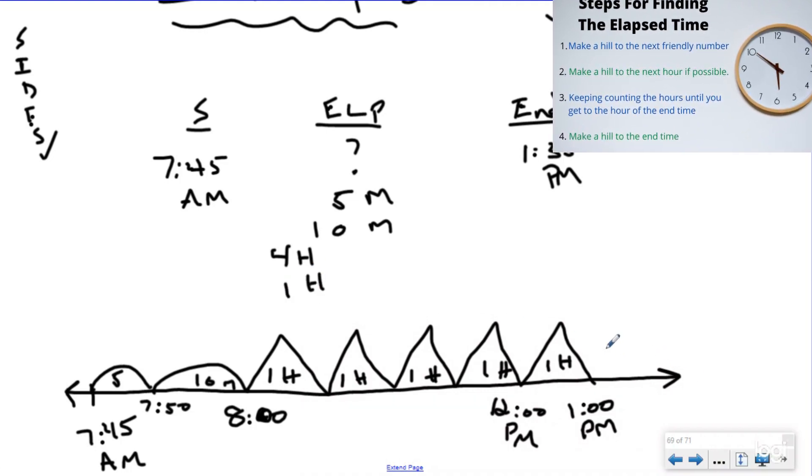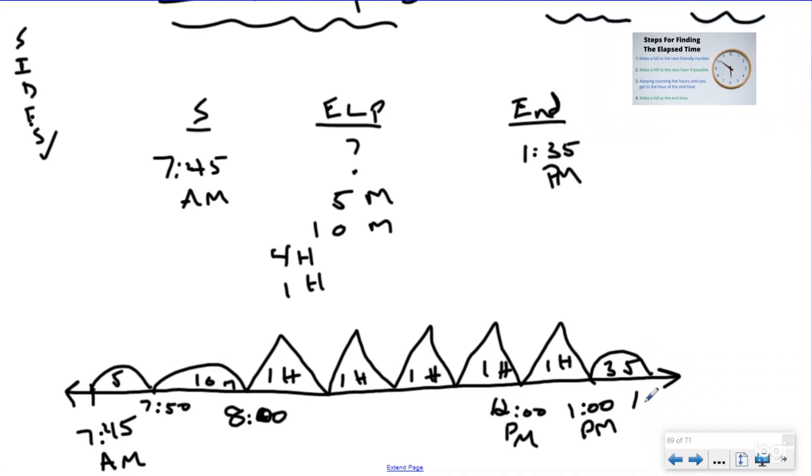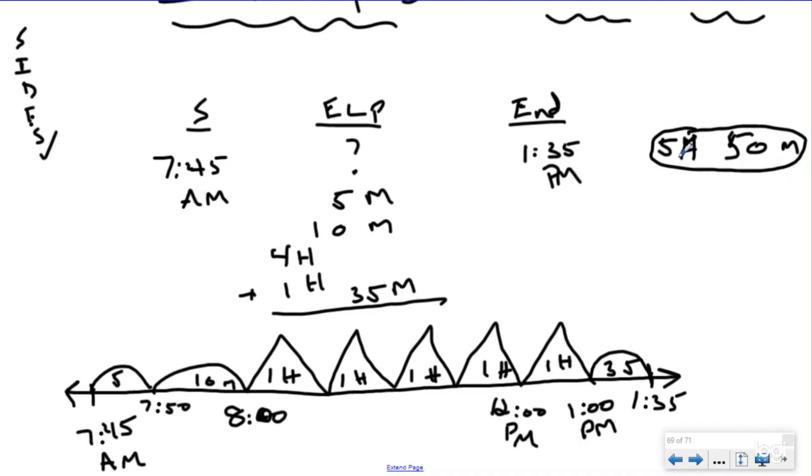And now I'm at 1. I'm trying to get to 35. So obviously, I just add a 35-minute hill, which is going to take me to my end time of 1:35, and I want to write that down. On my timeline, I've gone from my start time to my end time, which means I just need to add up my total elapsed time. And I'm going to do that over here because when you do that, you're going to get 50 minutes, and you're going to have five hours. So the total elapsed time that I worked on that song was five hours and 50 minutes.